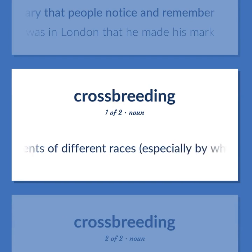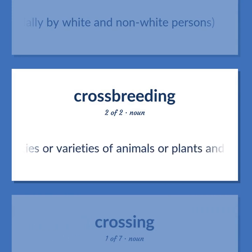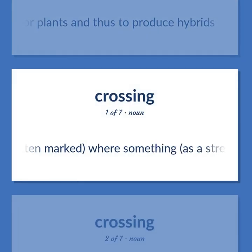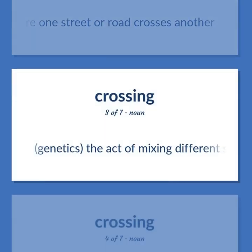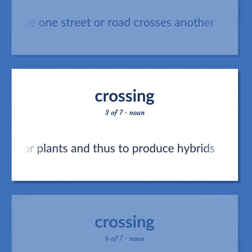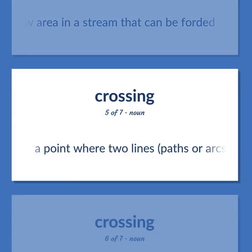Crossbreeding: Reproduction by parents of different races, especially by white and non-white persons. Genetics: The act of mixing different species or varieties of animals or plants to produce hybrids. Crossing: A path, often marked, where something such as a street or railroad can be crossed to get from one side to the other. A junction where one street or road crosses another. A shallow area in a stream that can be forded. A point where two lines, paths, or arcs intersect.